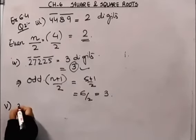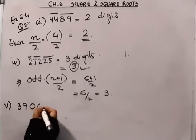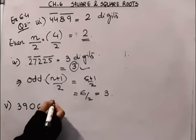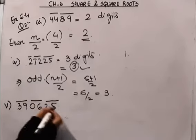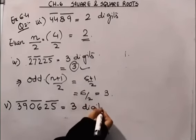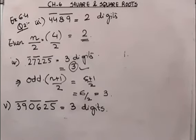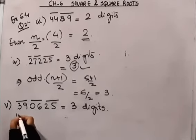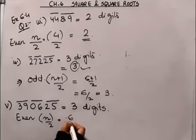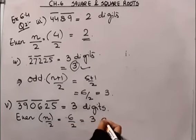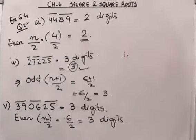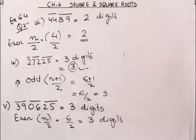The last example is 390625, which has 6 digits. Placing bars in pairs from the right, we get 3 bars, so the square root has 3 digits. Using the formula method, since 6 is even, n/2 = 6/2 = 3 digits. Both methods give the same answer. You can choose either method.